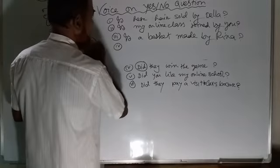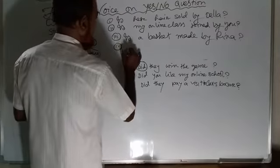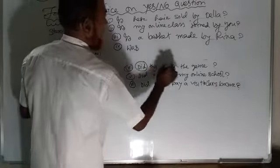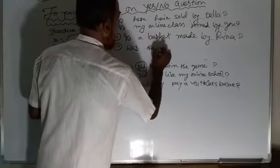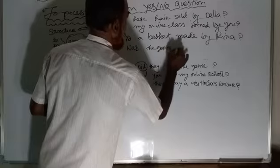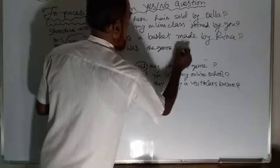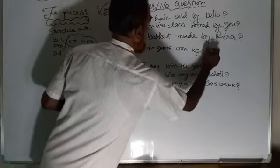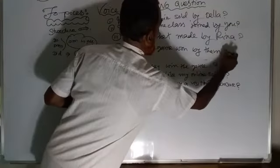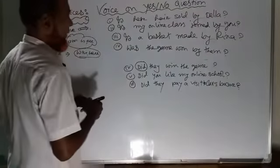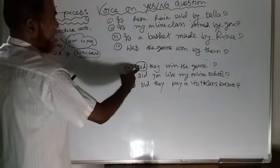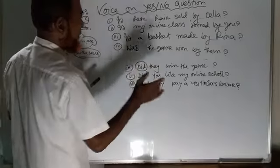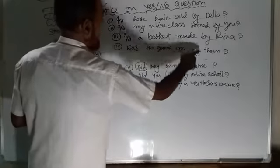Number four, write down with me. At the beginning of the passive sentence, we write 'was'. The game is singular, so: Was the game won by them? Okay, my dear participant. 'Did' is here, so 'was'. The game is singular, so: Was the game won by them? Very simple.